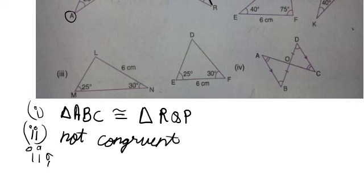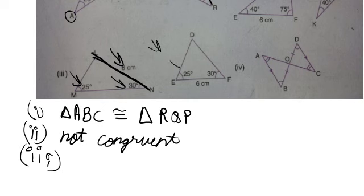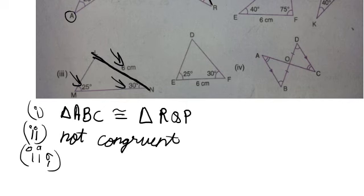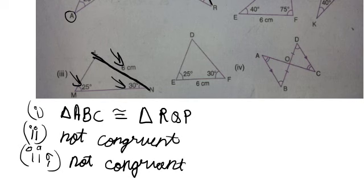For the third part, 25 degrees and 30 degrees are given, and the six centimeter side is opposite to both angles in one triangle. The other triangle also has 25 and 30 degrees with a six centimeter side — but that side is between the given angles, making it ASA, not AAS. Since one side is opposite and the other is between the angles, we cannot find an equal pair of sides. These triangles are also not congruent.